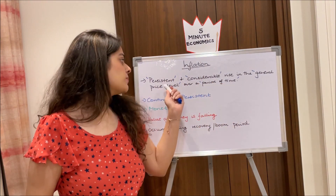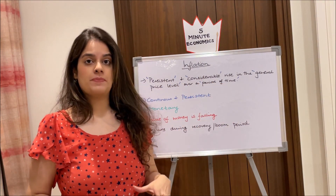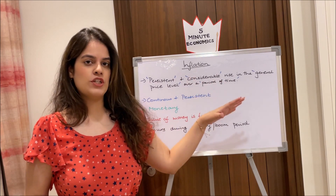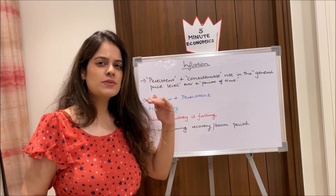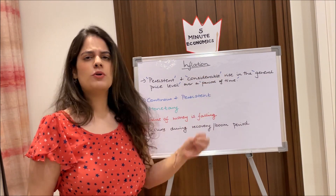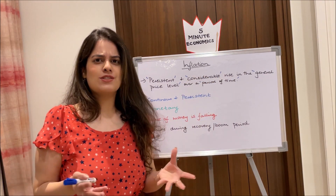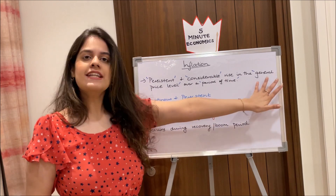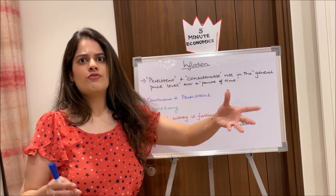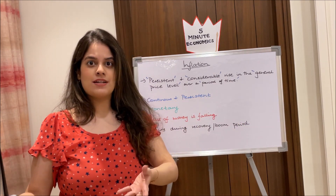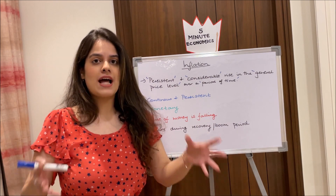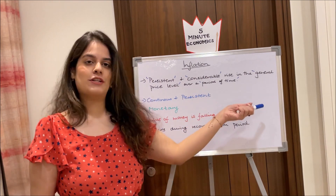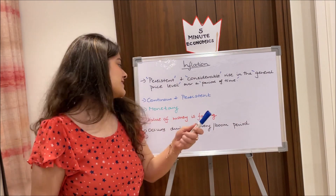Make sure you use these terms when talking about inflation. 'Persistent' — because it has to be for a continuous period. 'Considerable' — because a one or two percent rise can't be called inflation; it has to be considerable. 'General price level' — because if only one or two commodities see a price rise, that's not inflation; it has to affect a lot of commodities. And of course, it occurs over a period of time.